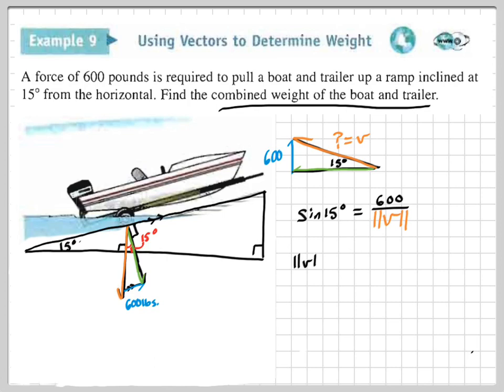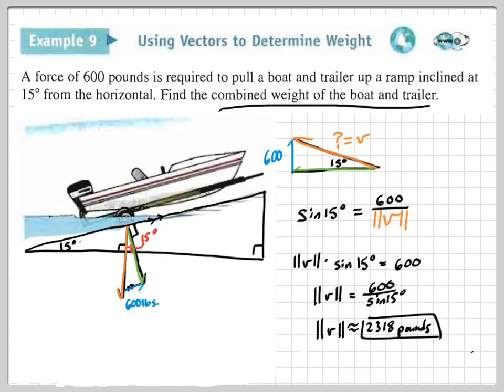And now we multiply both sides by the magnitude of V, and then we divide both sides by sine of 15 degrees. And then we throw this stuff into our calculator. We go 600 divided by sine of 15 degrees, and we get approximately 2,318 pounds. And that would be the combined weight of the boat and trailer.